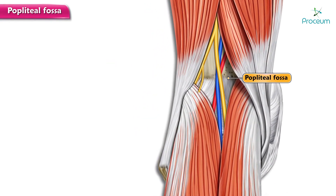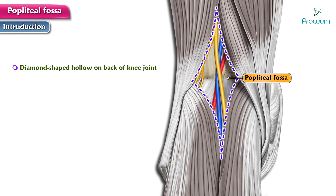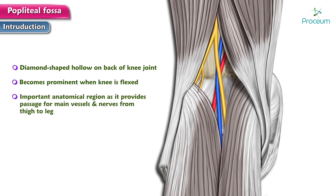Popliteal fossa. The popliteal fossa is a diamond-shaped hollow on the back of the knee joint. It becomes prominent when the knee is flexed. This fossa is an important anatomical region because it provides passage for main vessels and nerves from the thigh into the leg.